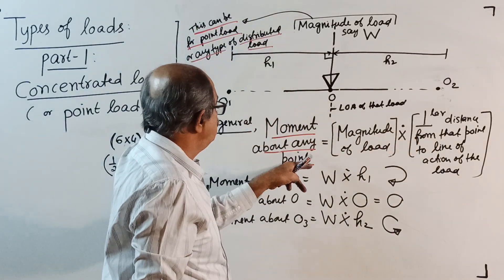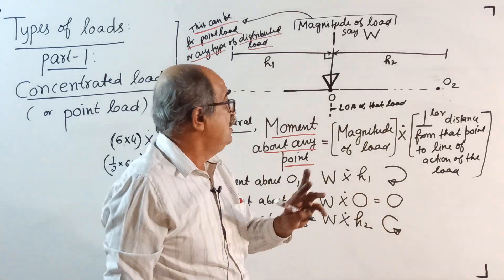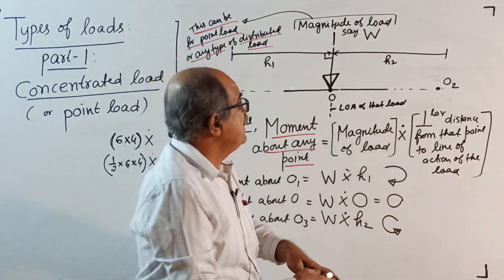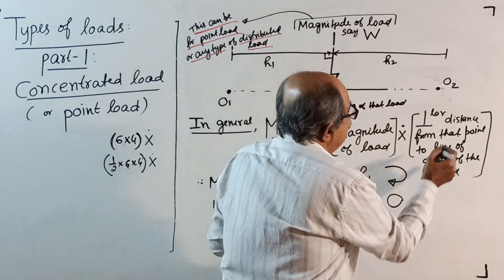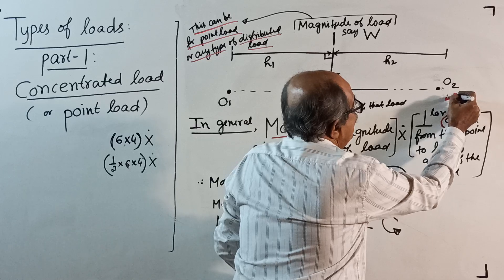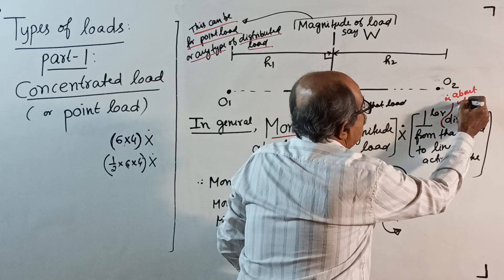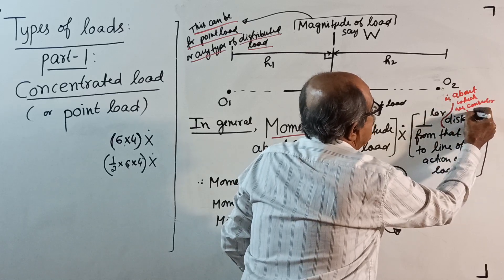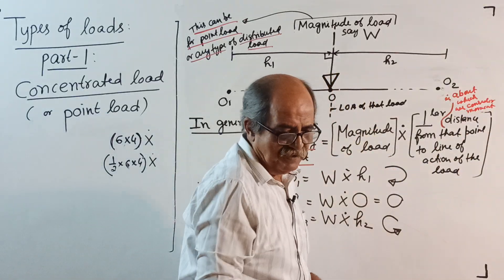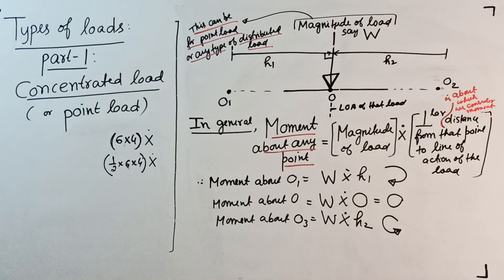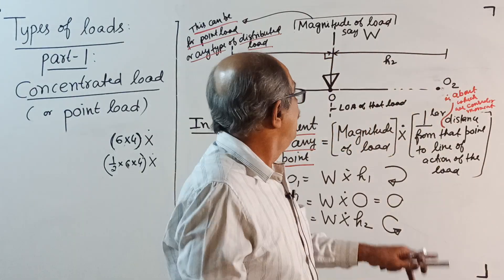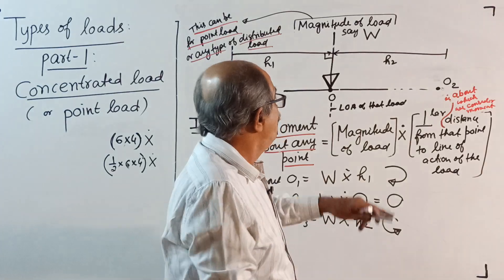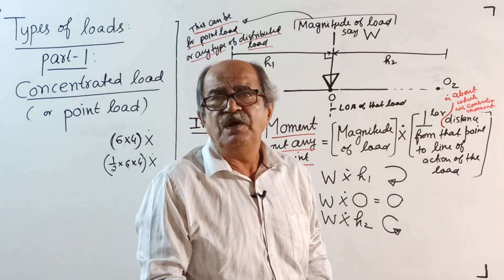Once you write 'moment about any point,' one point is selected. From that point — meaning the point about which we consider moment — drop a perpendicular to the line of action. For example, from o1 to the line of action, let the perpendicular distance be h1; from o2 to the line of action, let it be h2. So moment about o1 equals W into h1, the perpendicular distance from that point to the line of action of the load.